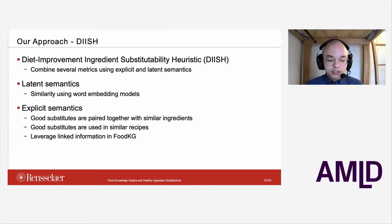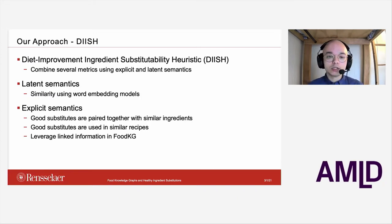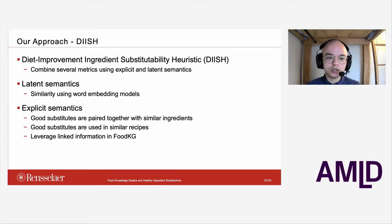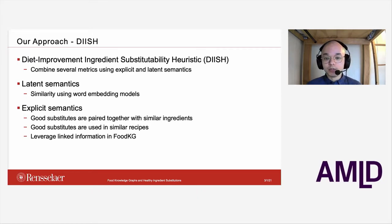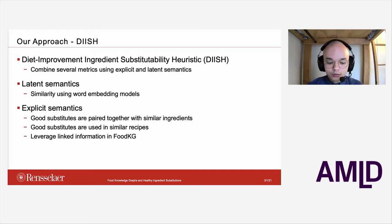Having thought about good and healthy substitutions, our approach was to develop a heuristic we named DISH — the Diet Improvement ingredient Substitutability Heuristic. We made this heuristic by combining several metrics of both explicit and latent semantics about ingredients from several datasets. For latent semantics, we mainly used word embedding models — one trained specifically on a large corpus of recipe information, including the instructions and ingredients used. For explicit semantics, we used information about ingredient classification, and to capture that good substitutions are likely to be paired with similar ingredients and used in similar recipes. We largely leveraged a resource we previously developed called the FoodKG.